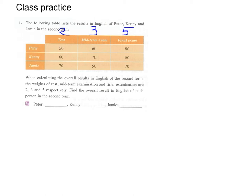And now we have to find the overall result in English of each person in this second term. Again, we can find the weighted mean of Peter first.